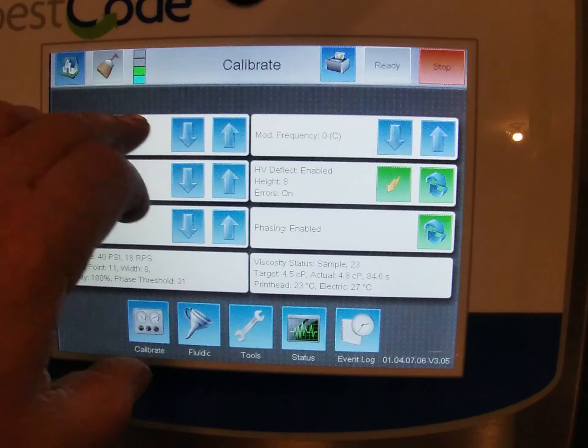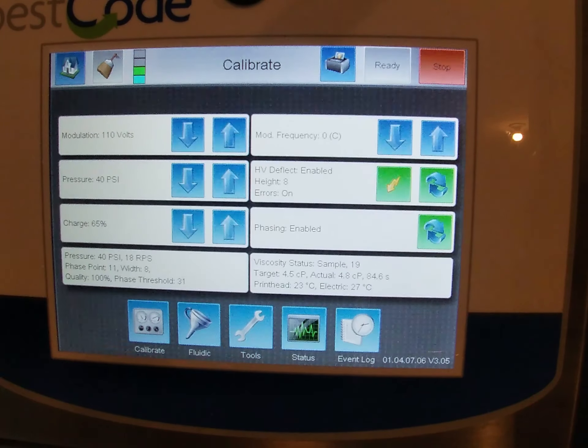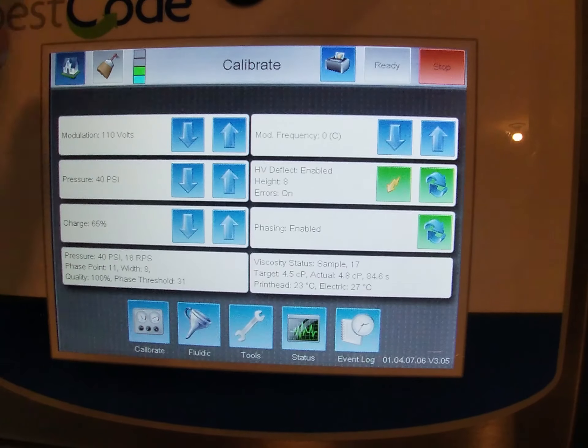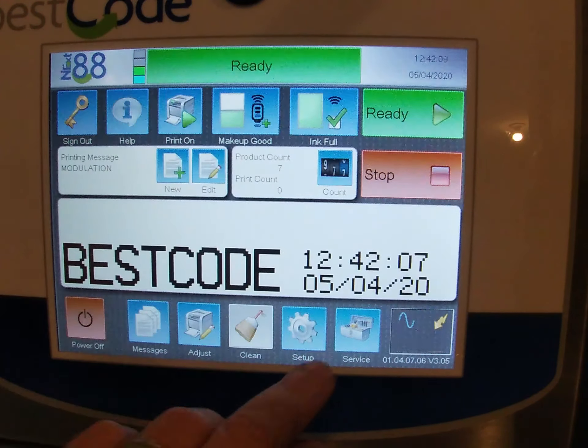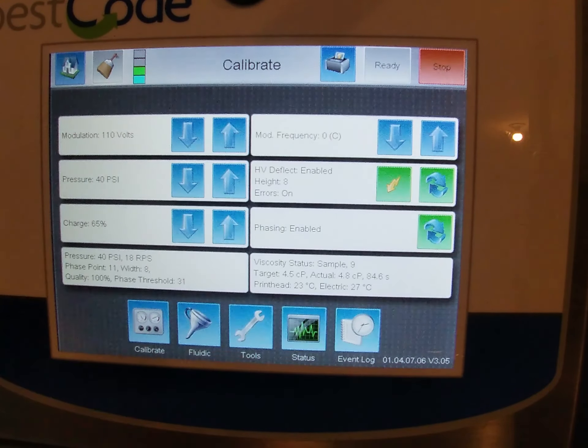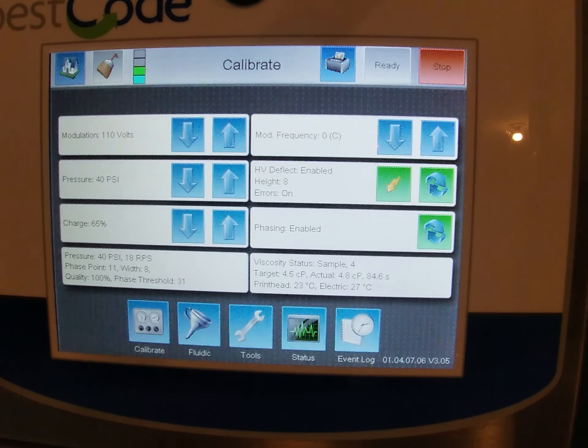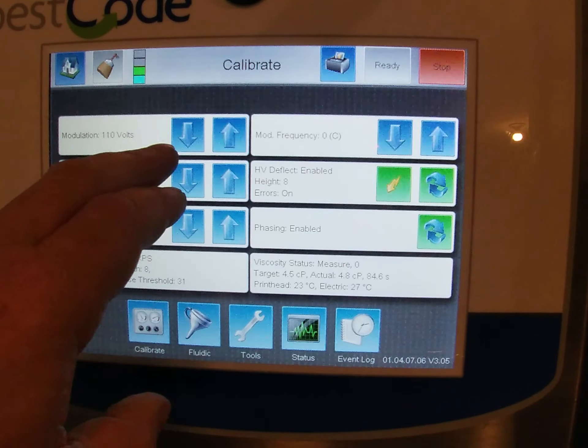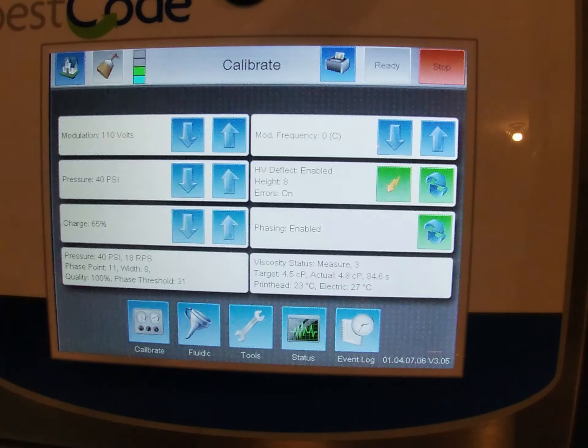So the modulation setting is right here. Modulation is currently set to 110 volts. And this is in the service screen. So from the home screen, we're going to go into service. And you see the modulation is up the top left, the same screen with the viscosity reading. So what I'm going to do is first of all, I'm going to change this voltage. I'm going to take it down to the minimum.